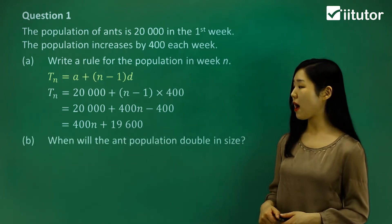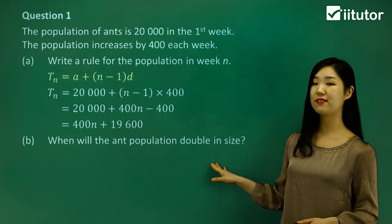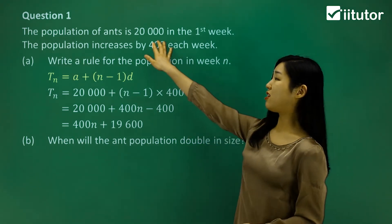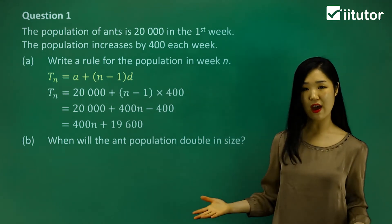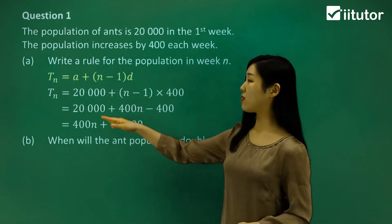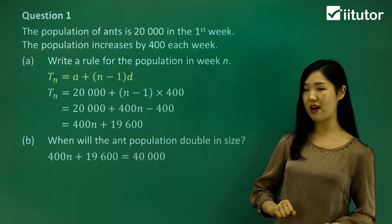Now part b is asking us, when will the ant population double in size? The ant population was initially 20,000. If it doubles, it would be 40,000. So we want to know when tn equals 40,000.